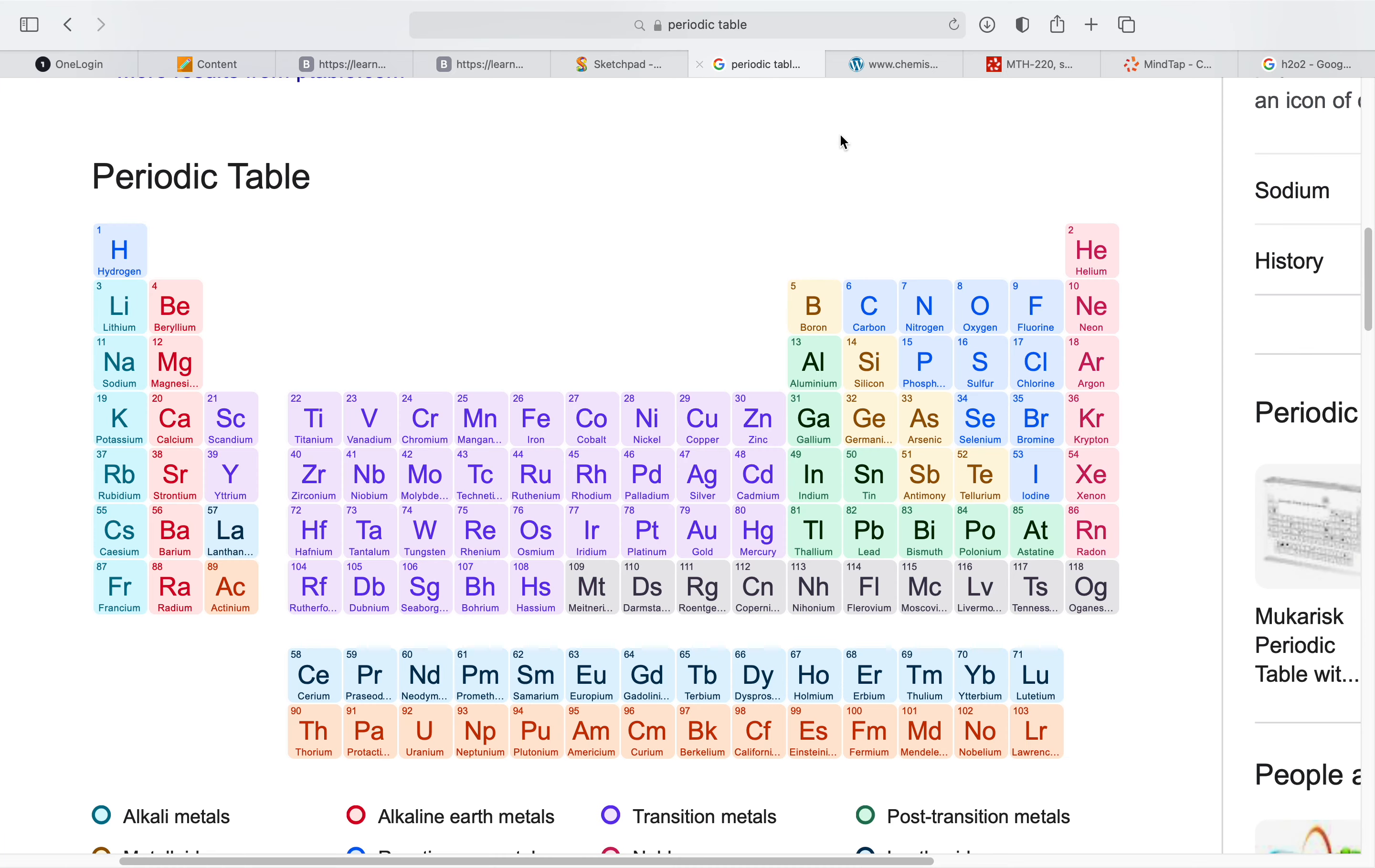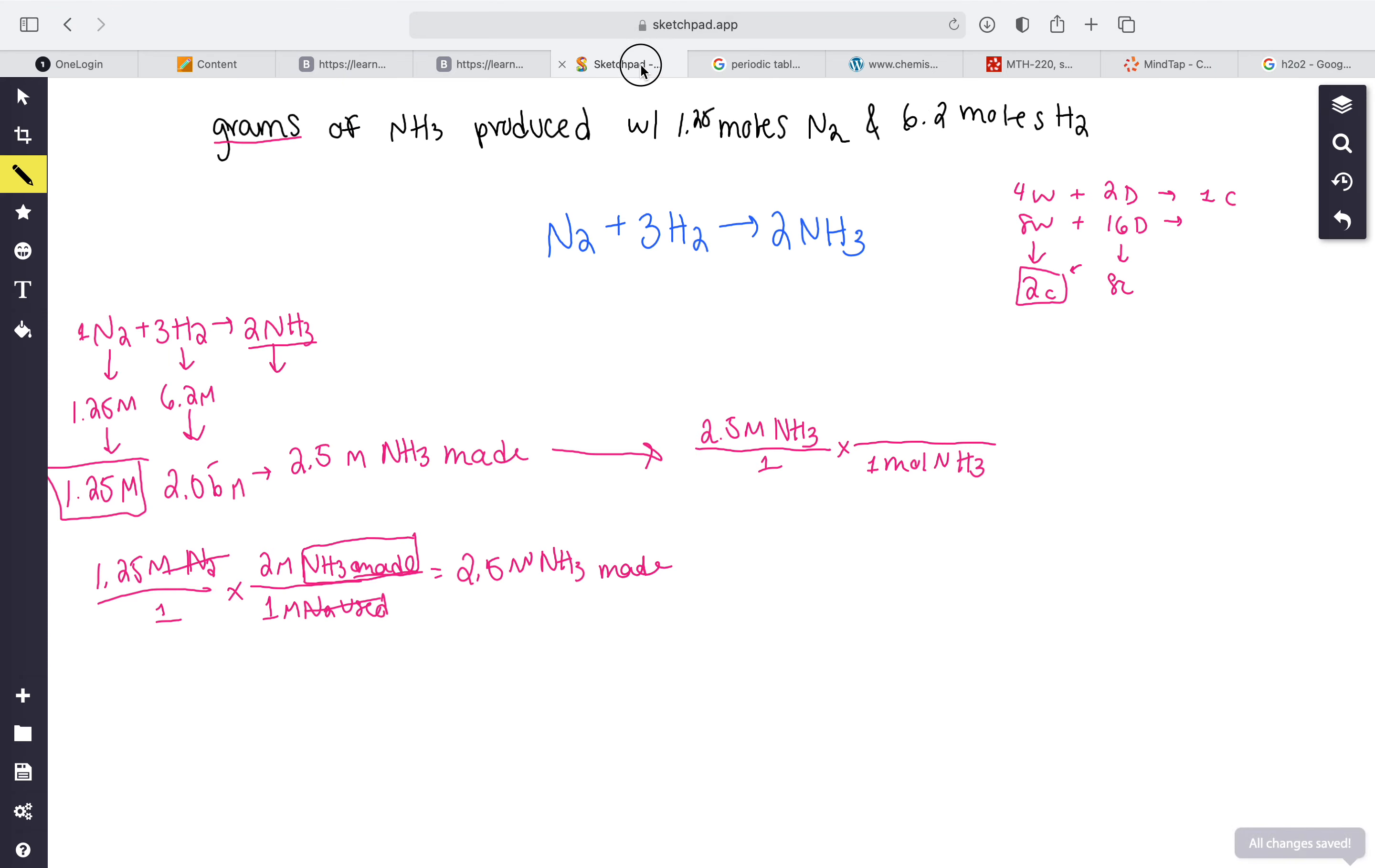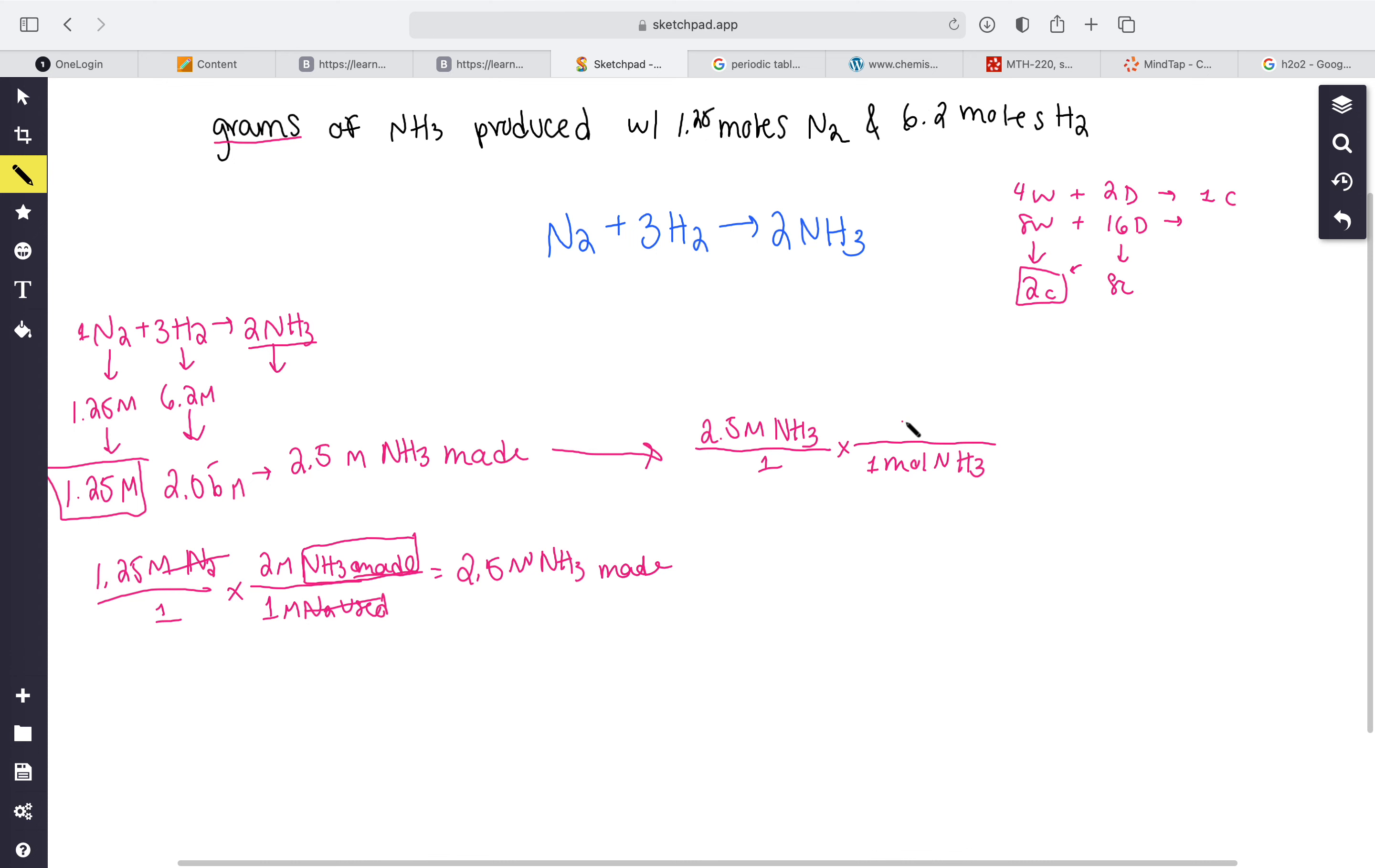Let's find out the mass of nitrogen is 14, so 14 plus 3, that's 17. 17 grams of NH3. Canceling these out, this is what we want on top, so let's do that in our calculator.